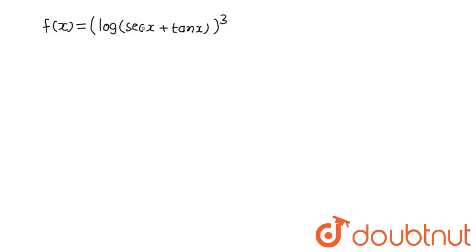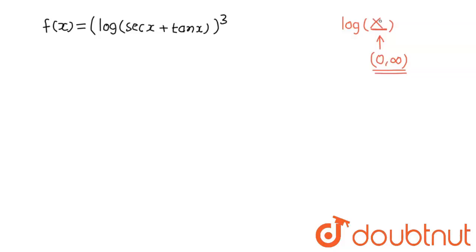This is a function of logarithm. Log is increasing when its argument lies between 0 and infinity. So if the term inside has a range of 0 to infinity, then log of that term is increasing, and an increasing function is always one-one. Let g(x) = sec x + tan x. Differentiating: g'(x) = sec x tan x + sec²x = sec x(tan x + sec x).